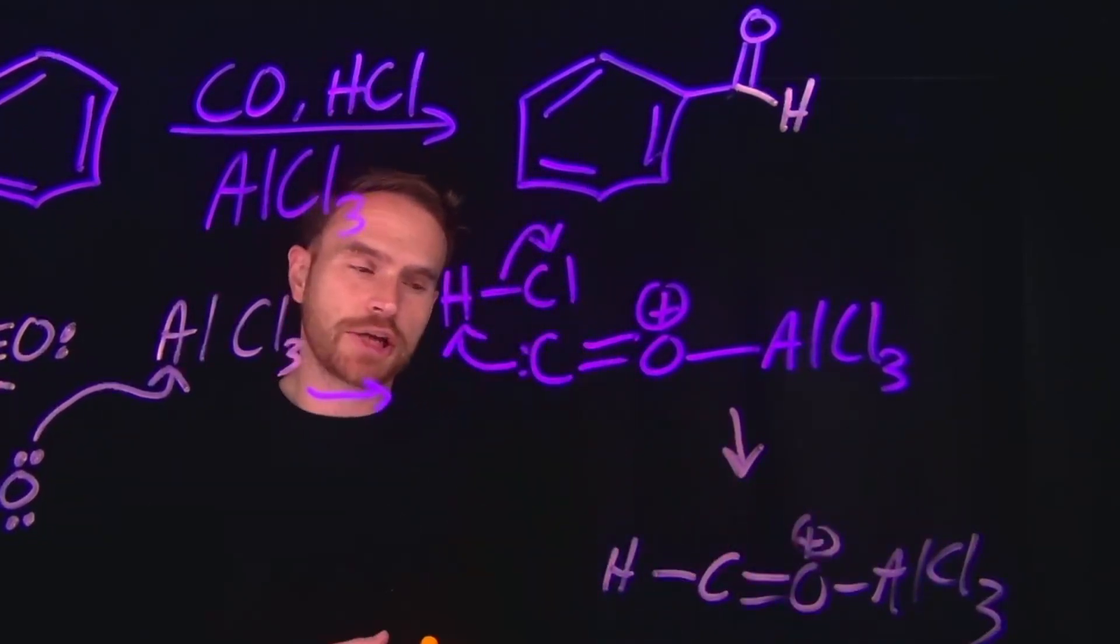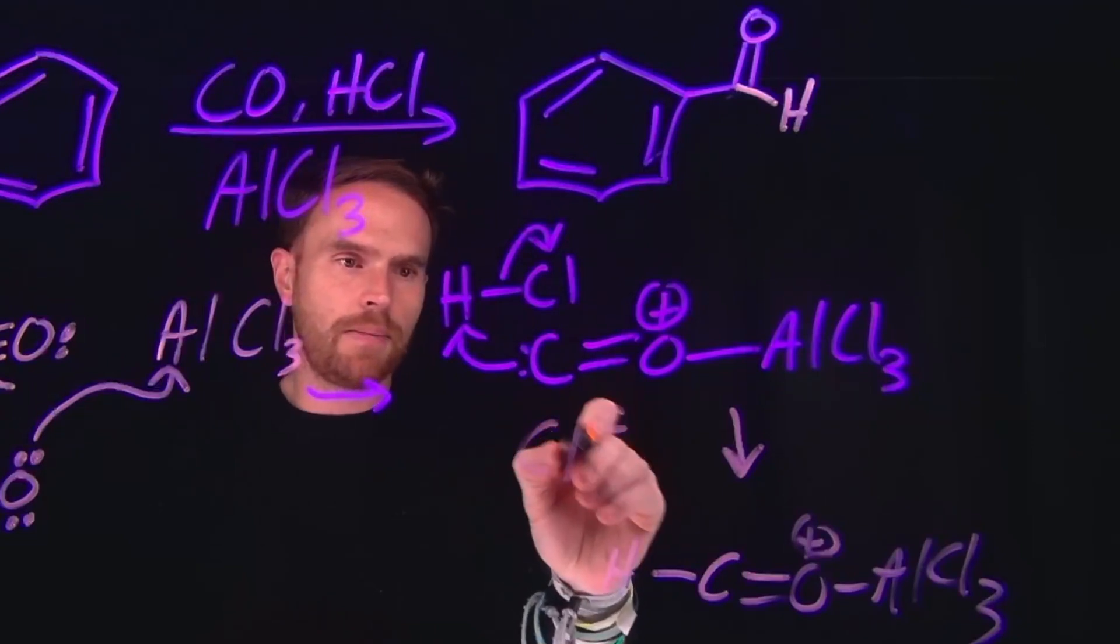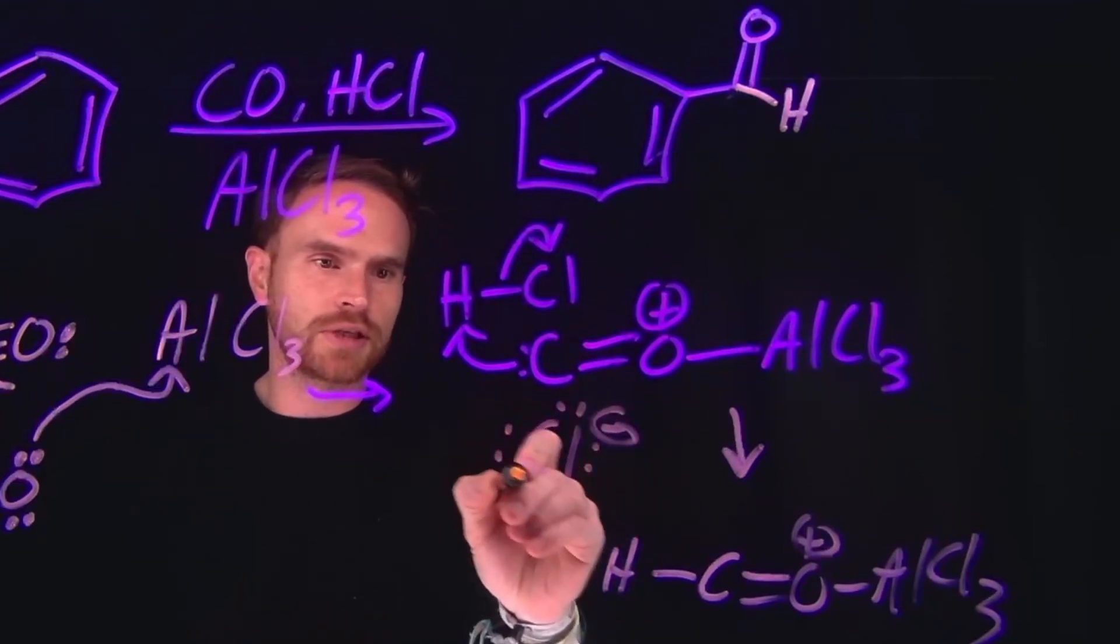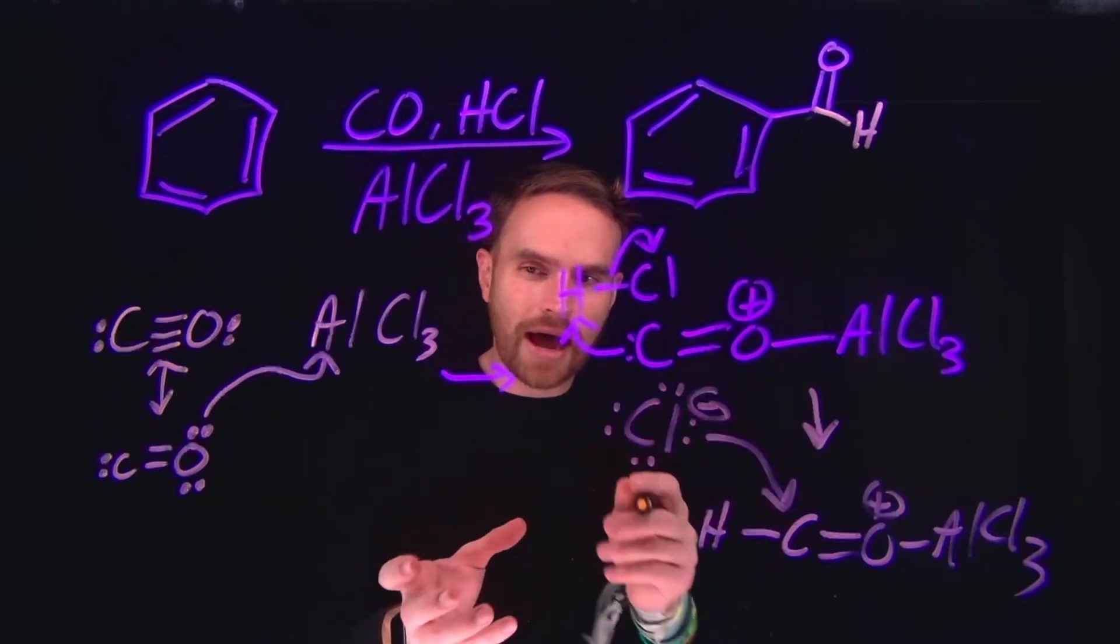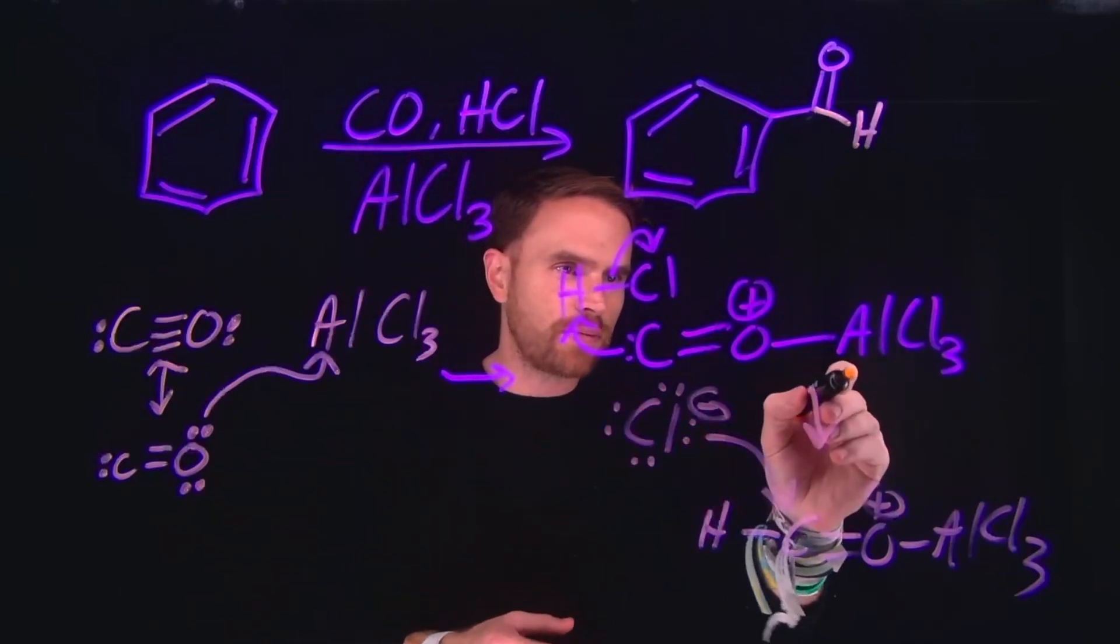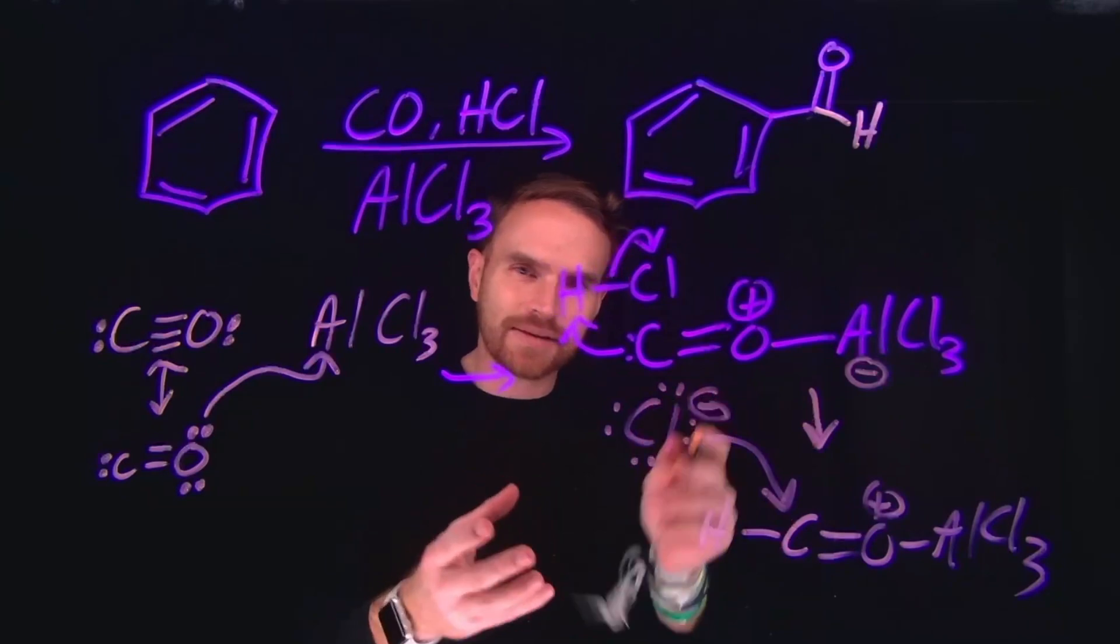So now we have this complex. And from here, that chloride that we generated at this position will come and attack using its lone pairs, the carbon atom. And importantly, this all happens because once this complex is formed, now we have generated an active electrophile.